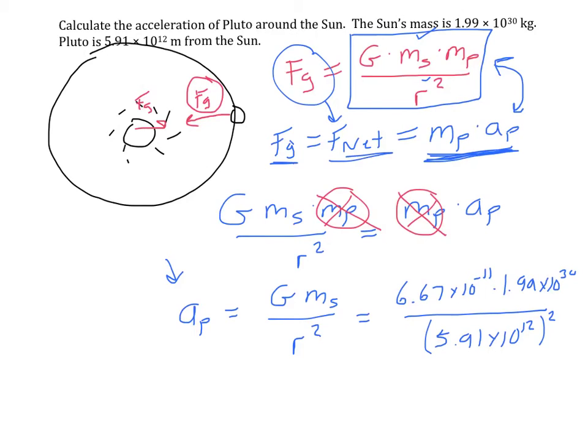And when I do that, I get an acceleration of 3.8 times 10 to the negative 6. And this is an acceleration. So it's meters per second squared.